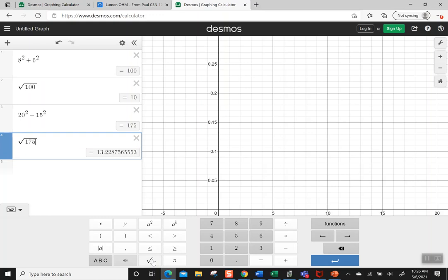Sometimes we're going to get decimals, and that's okay. Pay attention to the directions and the problem you're given so that if it says to round, you know what you're going to round to. Let's say we round to two decimal places. I'm going to call this 13.23.